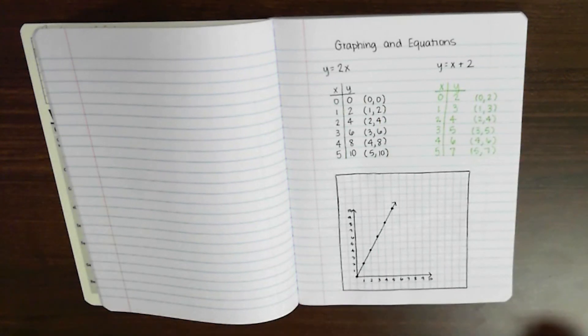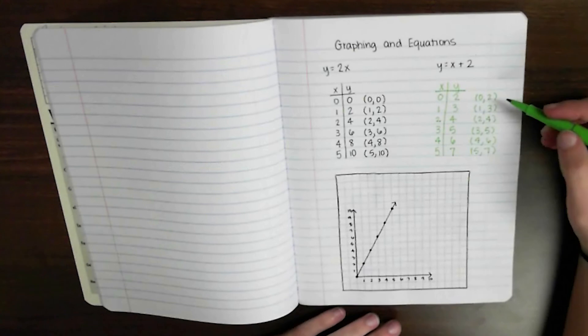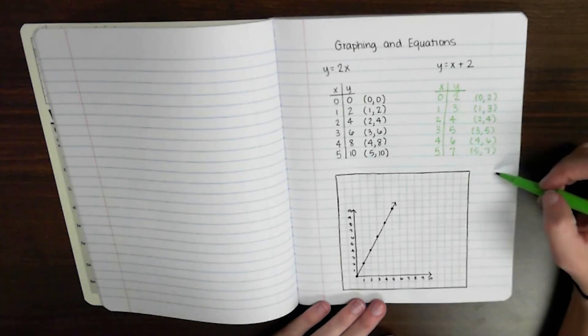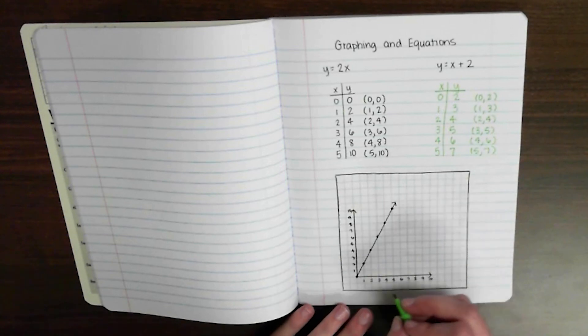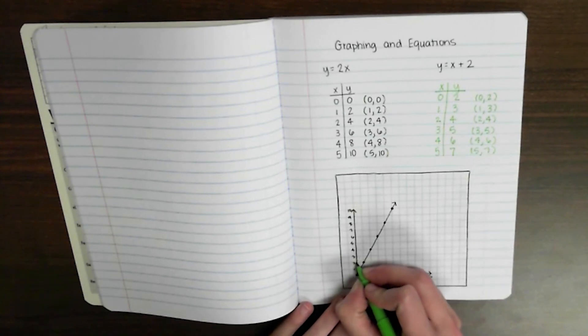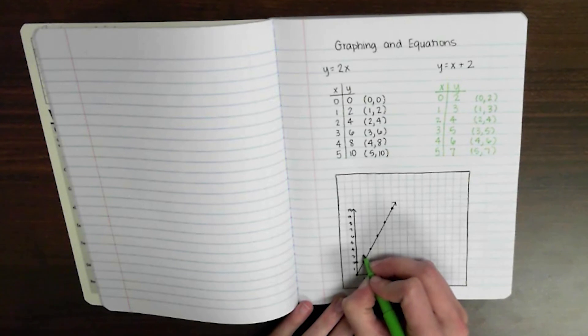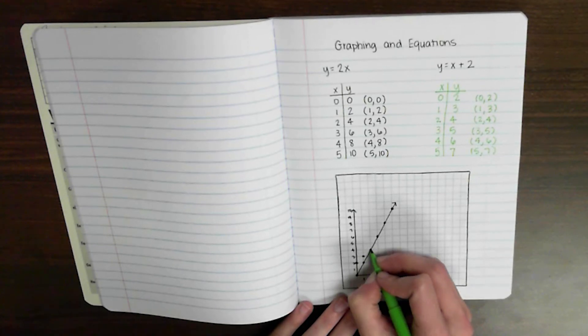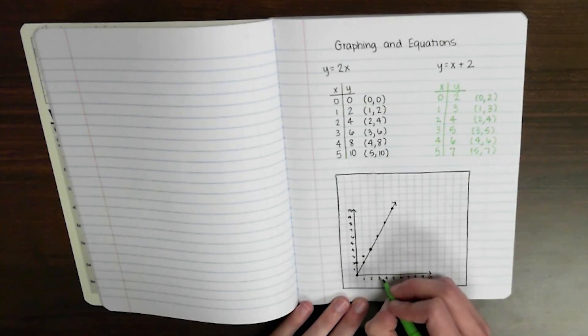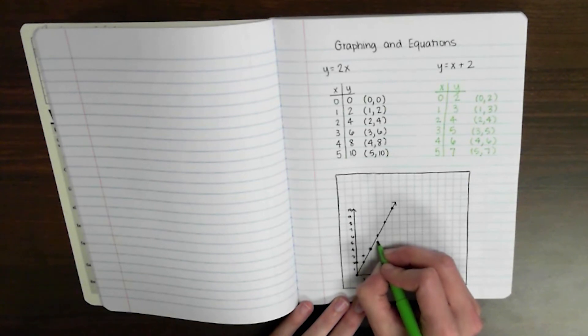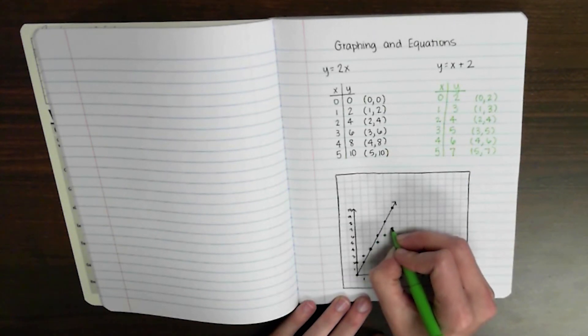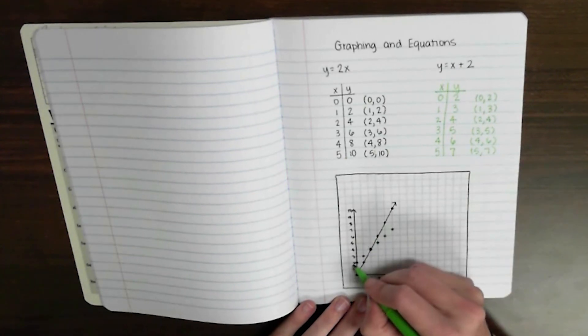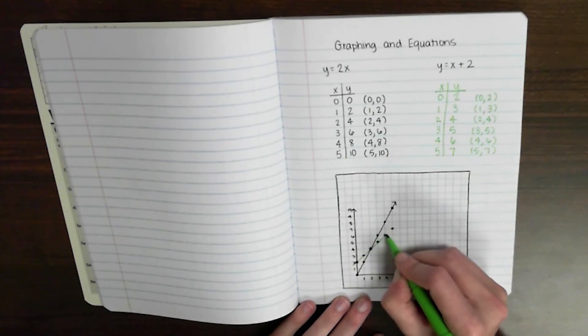Alright. So take your new color or your same color, whatever. Plot these points and we're going to see a different line happen. It's going to look very different than what we had before. So this one is 0, 2, 1, 3, 2, 4, 3, 5, 4, 6, and 5, 7. So I've got a really, really different line happening this time.